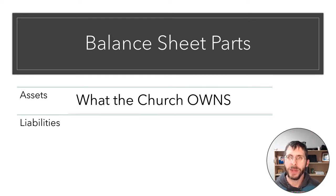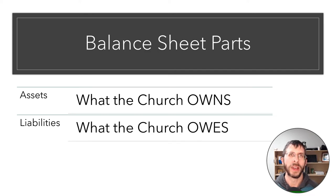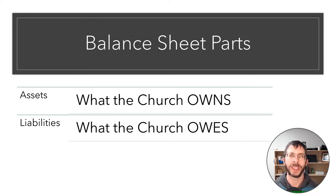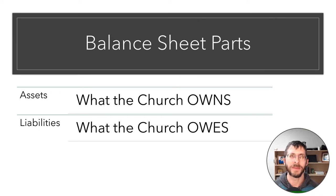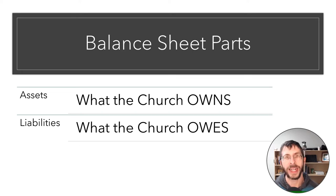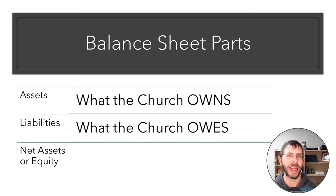The next thing is liabilities. A liability is anything that the church owes — so it's a debt. It could be taxes that you've withheld from your employees that you owe to the IRS. It could be a mortgage. It could be accounts payable — so they'll put a bill into the system, and while that bill is in the system it shows up as an account payable, and once it's paid out, that goes away.